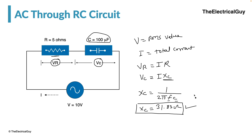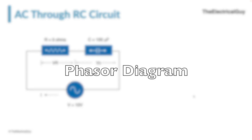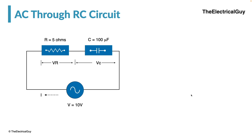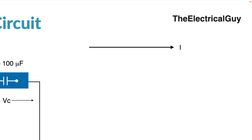Now let us look at the phasor diagram of the RC circuit. To draw the phasor diagram we need to consider a base, and for that we will be considering current as our base. In a resistive circuit, voltage and current are perfectly in phase with each other, and as a result the voltage drop across the resistor is also in phase with the current. So we represent VR exactly in phase with the current.